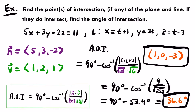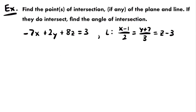Let's look at another example. We want to find the point or points of intersection, if any, of the plane and the line, and if they do intersect, find the angle of intersection. This time our plane is negative 7x plus 2y plus 8z equals 3, and our line is given by the symmetric equation: (x minus 1)/2 equals (y plus 7)/3 equals z minus 3.